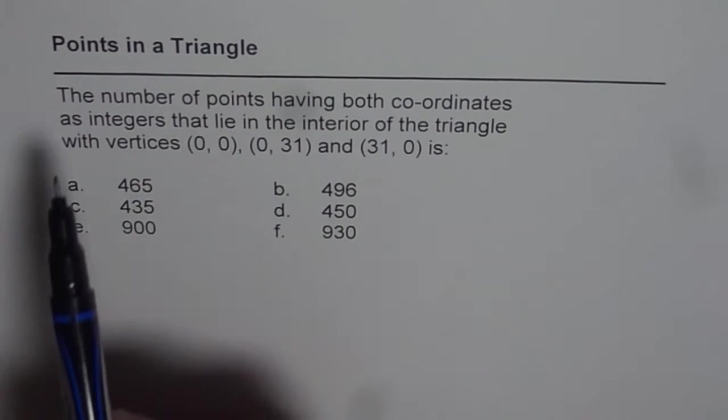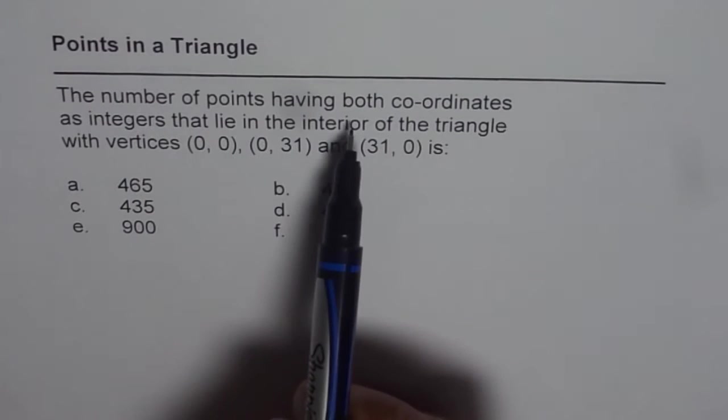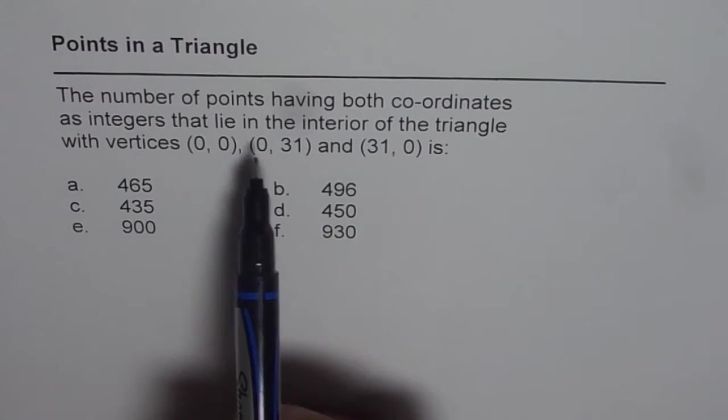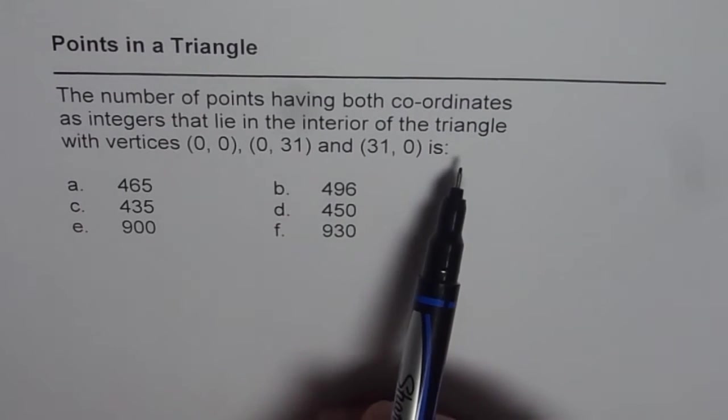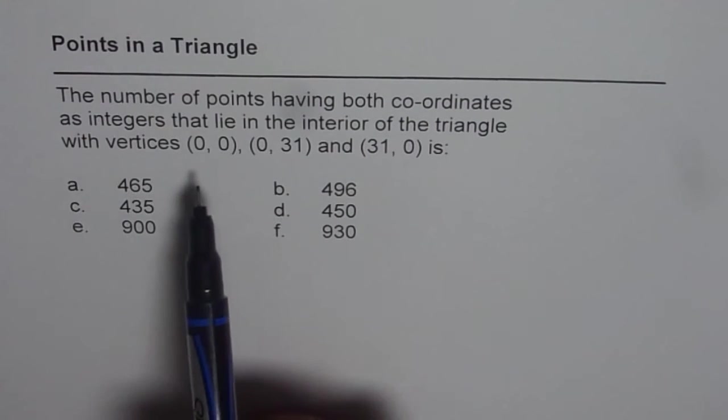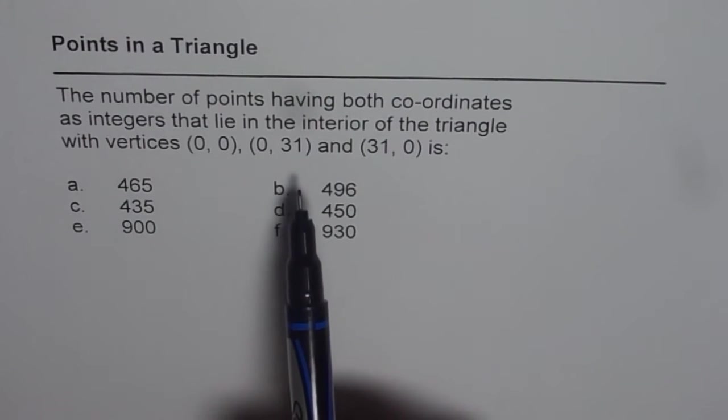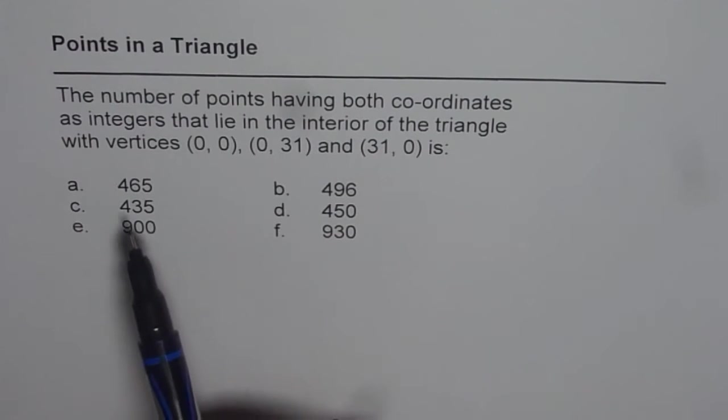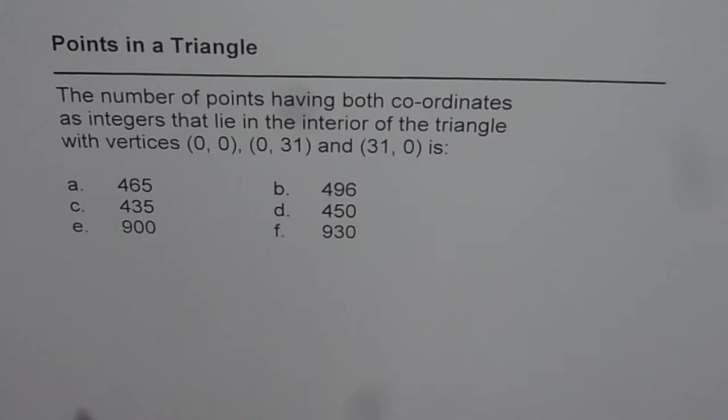Question here is relating to points in a triangle. Let's read the question first. The number of points having both coordinates as integers that lie in the interior of the triangle with vertices (0,0), (0,31) and (31,0) is. We are given 6 choices. We need to figure out which one is the right choice.